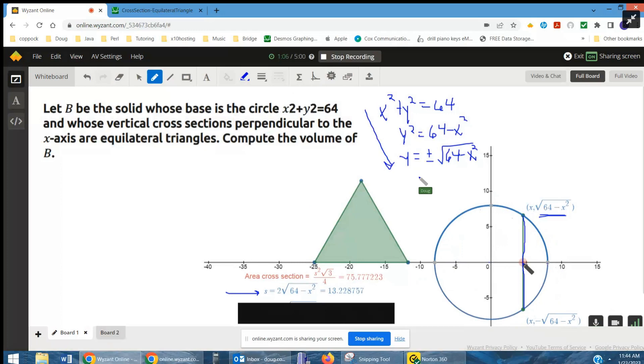So if we pick, this is what we're picturing as one of the cross sections that are perpendicular to the x-axis. We're visualizing this equilateral triangle coming up out of the ground.